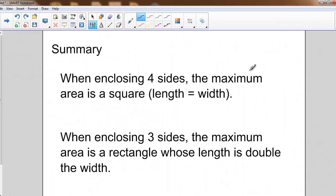So it looks like we have two rules from this that we can summarize. When enclosing four sides of a rectangle, the maximum area is a square where our length equals our width. When we're enclosing three sides of a shape, so maybe we have a river or a barn on one side, the maximum area is a rectangle whose length is exactly double the width, or length equals two times the width.